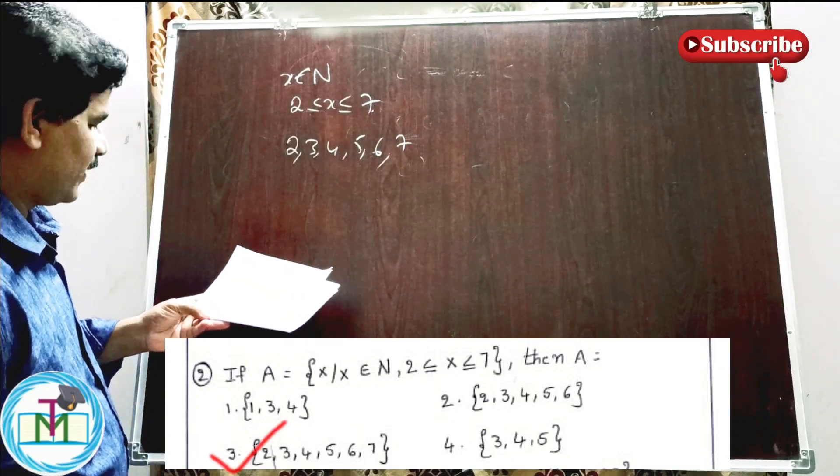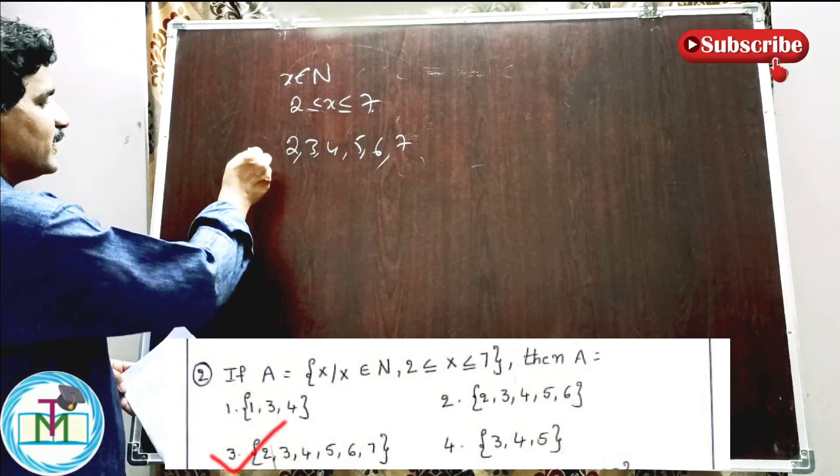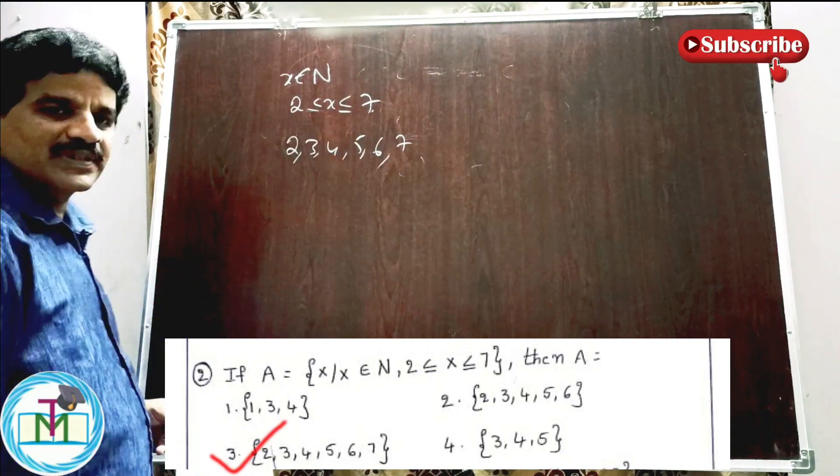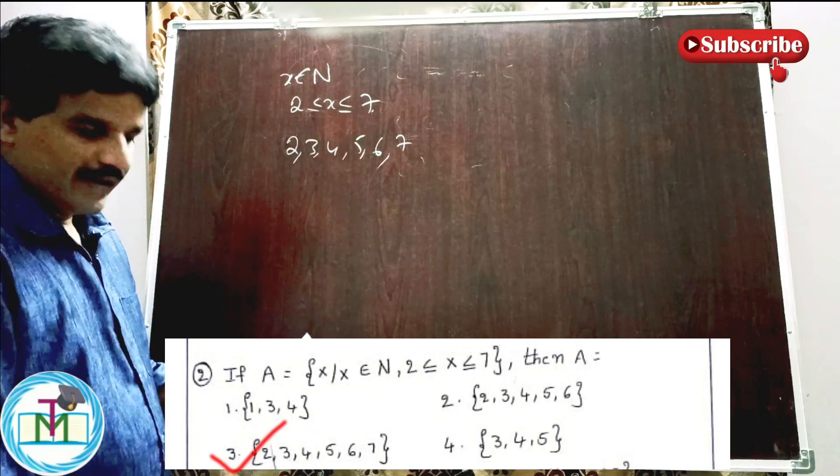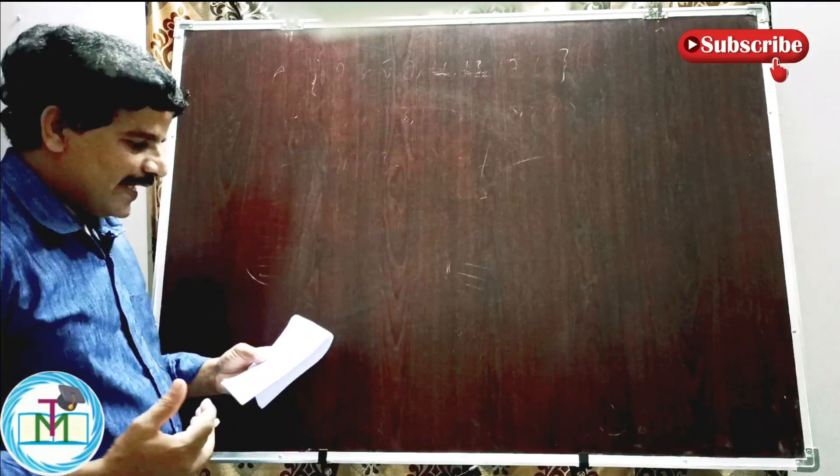So the set is {2, 3, 4, 5, 6, 7}. Option 3 is the right answer.